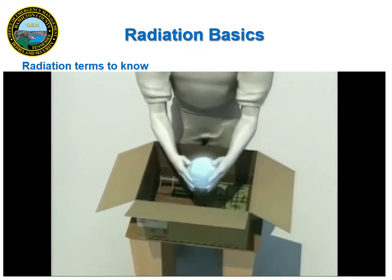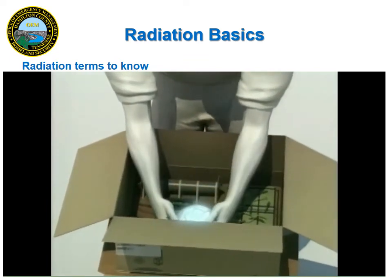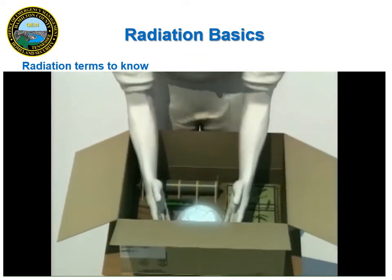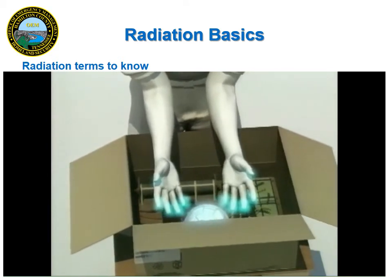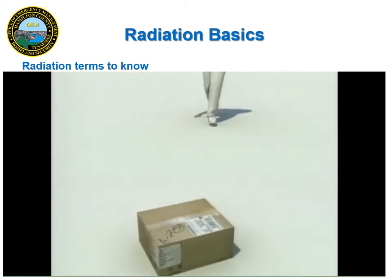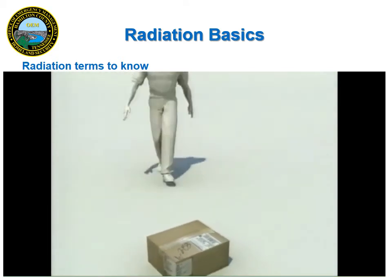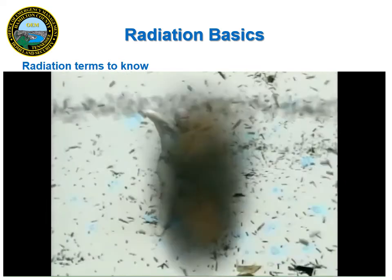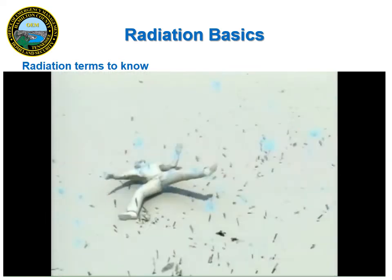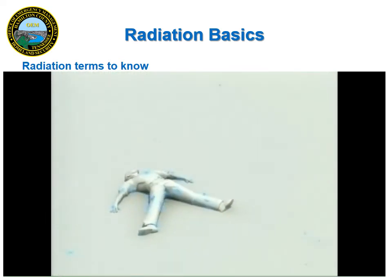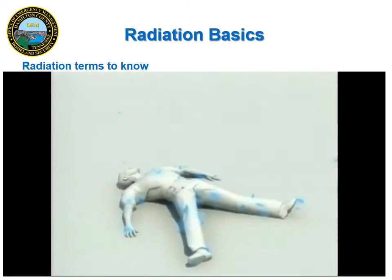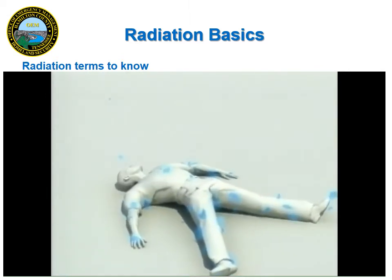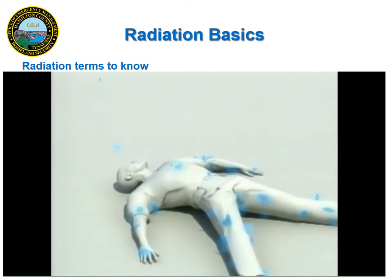To become contaminated, radioactive material must get on the skin, clothing, or inside of the body. For example, consider a dirty bomb — a conventional explosive such as dynamite that is laced with radioactive material. When the device is detonated, people could not only be injured by the blast but become contaminated.